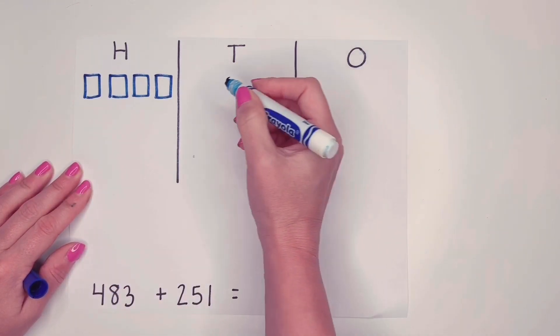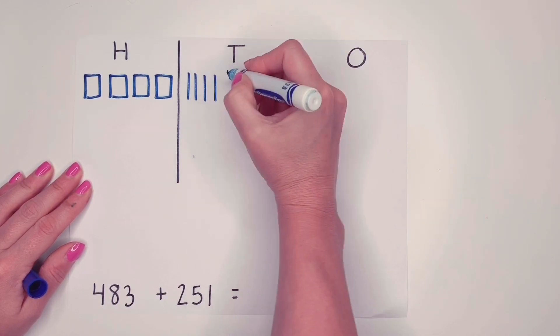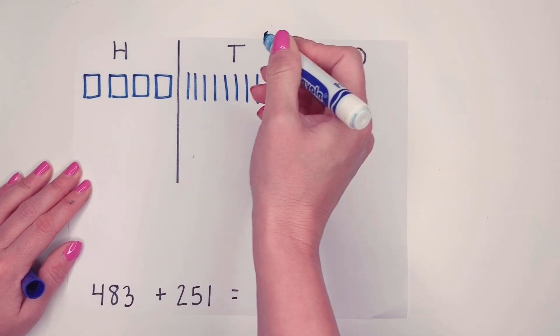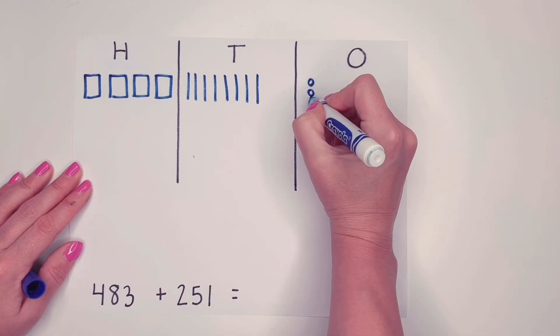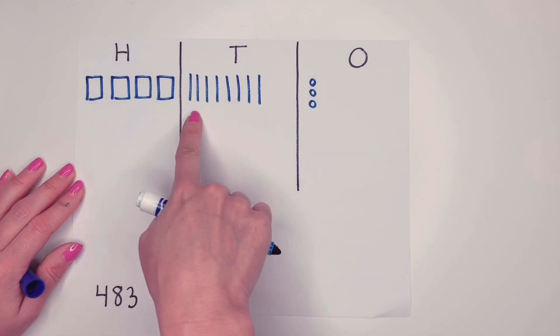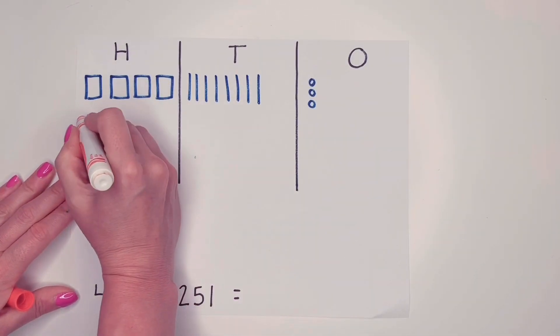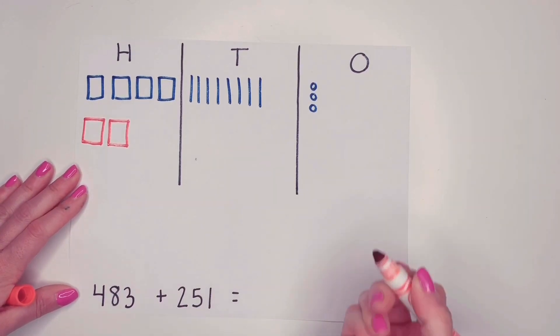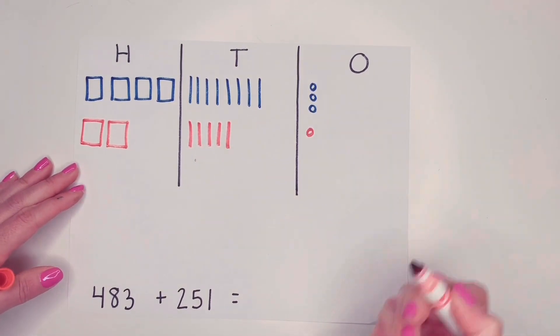So there's my 400. Now 80. I need to use my ten sticks. Remember, these aren't tallies. These are ten sticks. So please don't cross off the fifth one. And then you have three ones. So there is 483. Now I'm going to get my red marker and I'm going to show 251. So there's my 200, my 50, and my one. So now I can add them together.